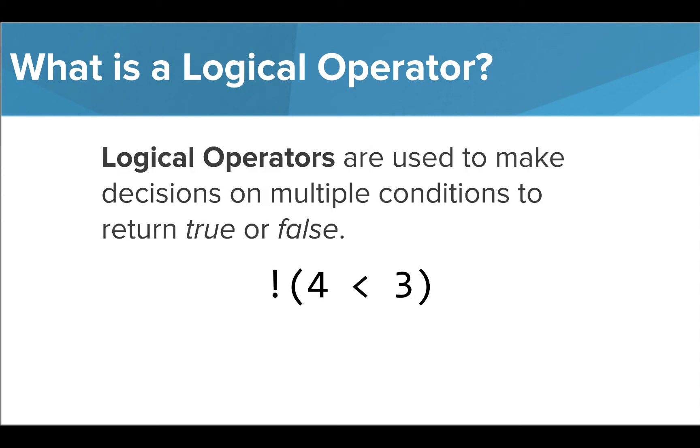For the NOT operator to evaluate to true, the given condition must be false. Our condition 4 is less than 3 is false. So NOT false will evaluate to true.